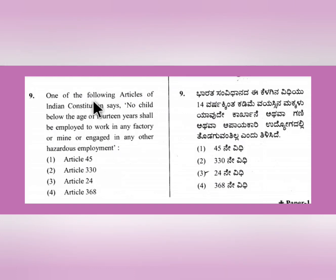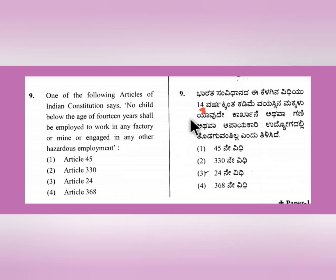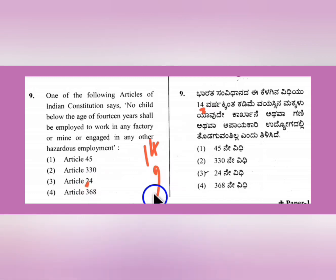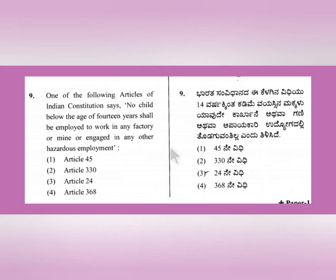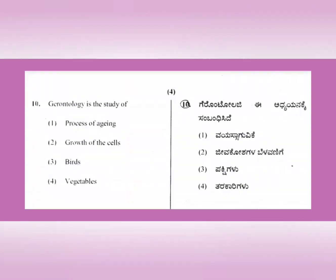Question 9: One of the following articles of the Indian Constitution states that no child below the age of 14 years shall be employed to work in any factory or mine or engaged in any other hazardous employment.